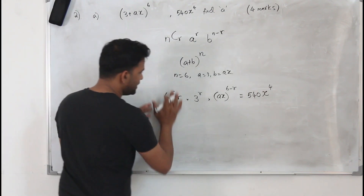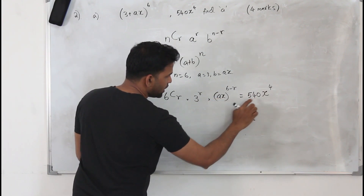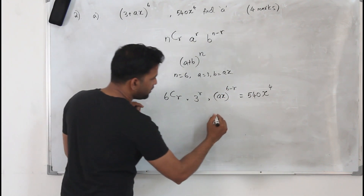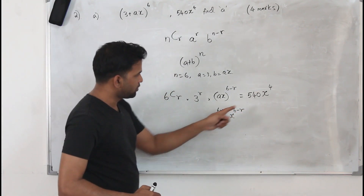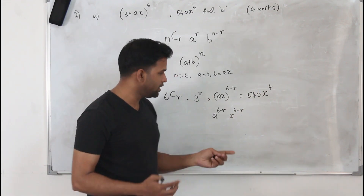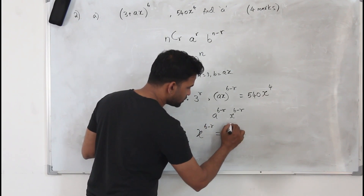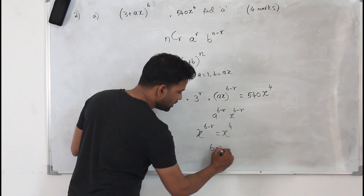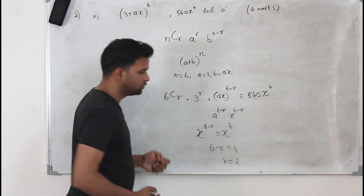When you compare both sides, you're supposed to get x^4. When you simplify, the x part becomes x^(6-r). So x^(6-r) should equal x^4, which means 6 minus r equals 4, giving r = 2.